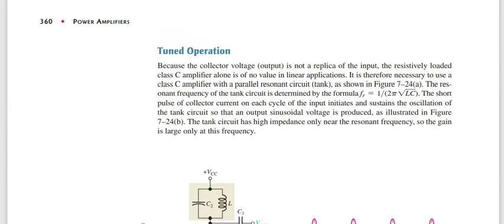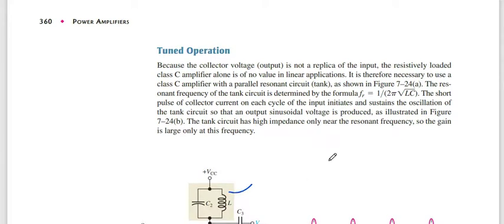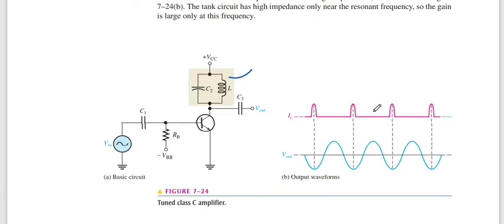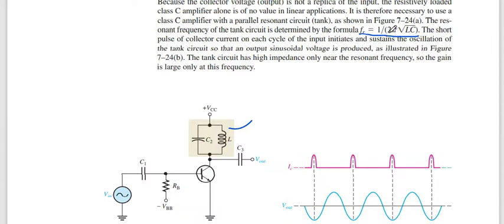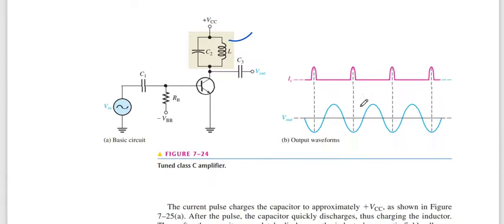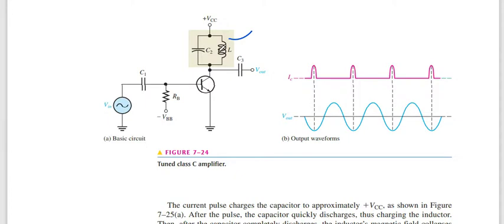Now, tuned operation: in tuned operation we use a resonant LC circuit. Using the resonant frequency formula, we get the output in the sinusoidal form. This formula tells us the combination of L and C values required. We will discuss step by step how to operate using this circuit.